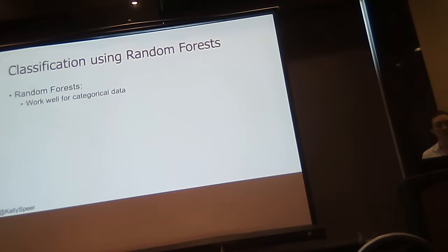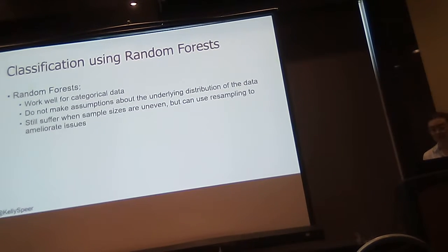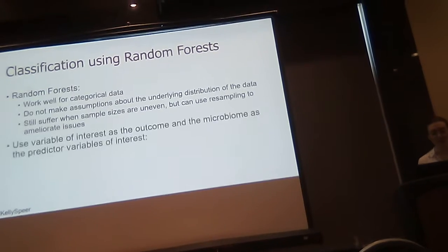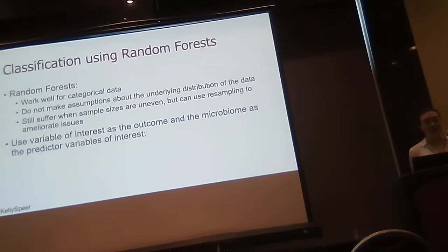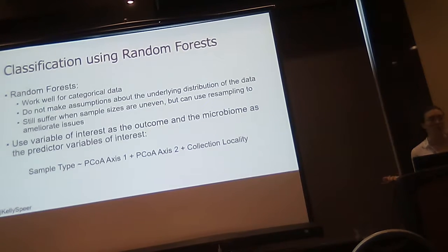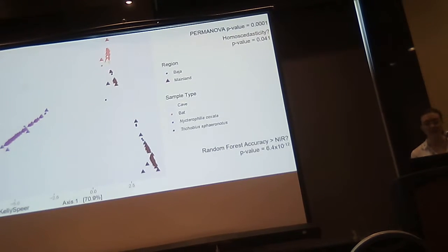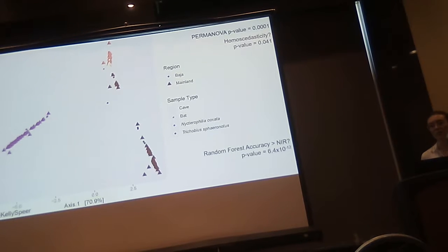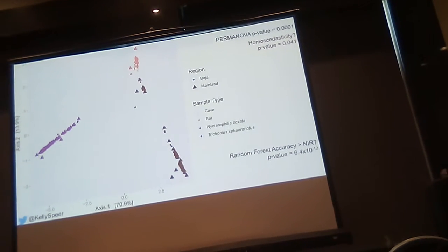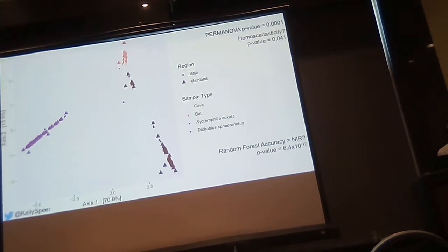Random forests work well for categorical data. They are a machine learning technique that does not make assumptions about the underlying data distribution. They do suffer with uneven sample sizes, but we accounted for that using resampling. I used sample type as the outcome variable and the principal component loading vectors as predictor variables with collection locality. Using 80% of data to fit the model and 20% to test it, the model performs significantly better than the no-information rate — which just picks the category with the most samples. So there is a robust signal of sample type in differentiating microbiomes, and bat fly microbiomes are distinct from their environment and from each other.